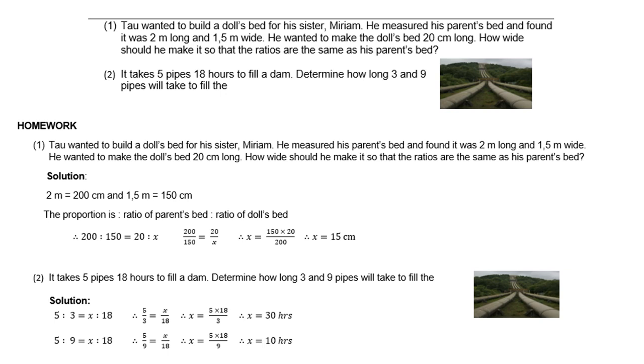Look at number two. It takes five pipes 18 hours to fill a dam. Determine how long three and nine pipes will take to fill the dam. So if it takes five pipes 18 hours, how long will it take three pipes? So there you are. Five is to three is same as X is to 18. So five thirds equals to X over 18, cross multiply and you get 30 hours. Or five over nine times X over 18, if you cross multiply, you get 10 hours.